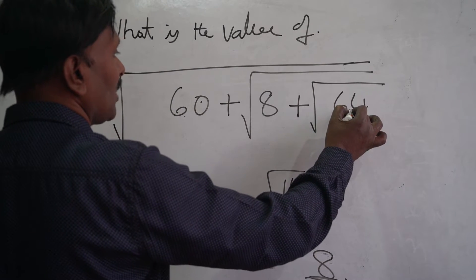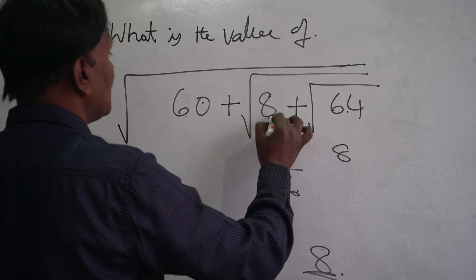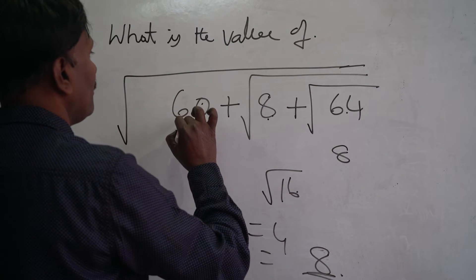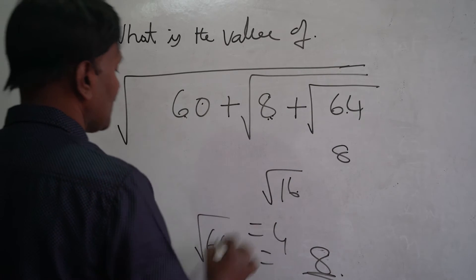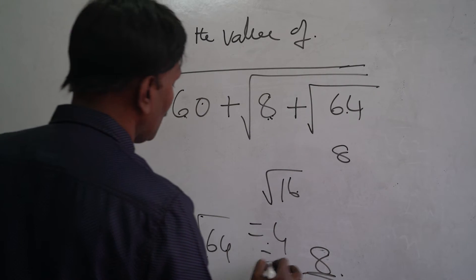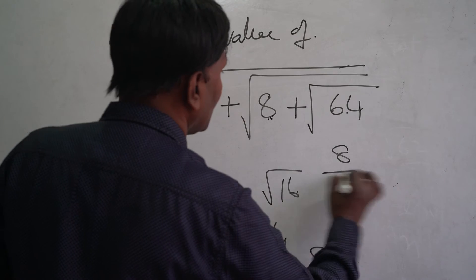So, root of 64 is 8. 8 plus 8 is 16. Square root of 16 is how much? 4. 4 plus 60 is 64. Root of 64 is how much? 8. So the output is 8.